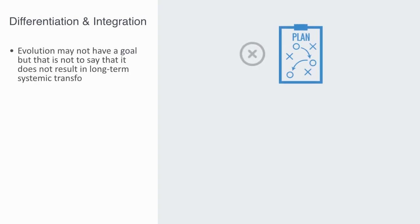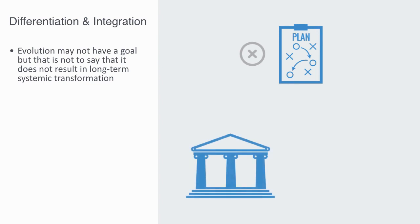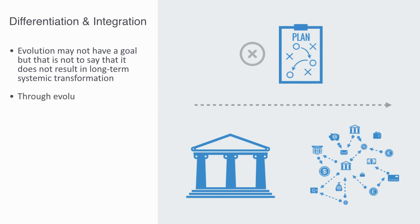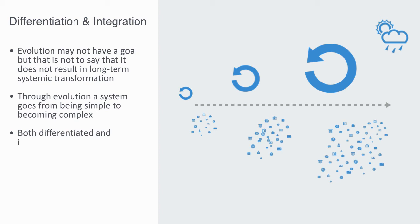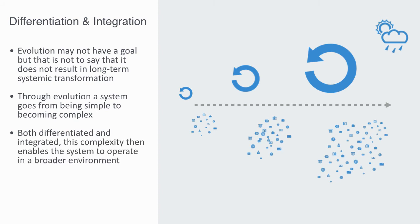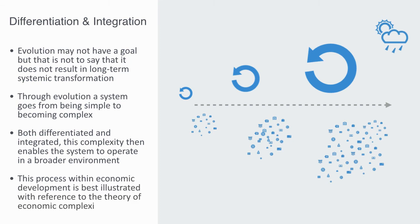Although the evolutionary method of development may not have any fixed goal, that is not to say that it does not result in long-term systemic transformations. Quite the contrary, in fact. It is through evolution that a system goes from being simple to becoming complex. Simple systems can just pop in and out of existence, but complex systems like our global economy are built through a prolonged process of evolution. During that process of evolution, they became both more differentiated and more integrated, and this is essentially what complexity is: a system that is both differentiated and integrated. This complexity then enables the system to operate in a more advanced, broader environment.